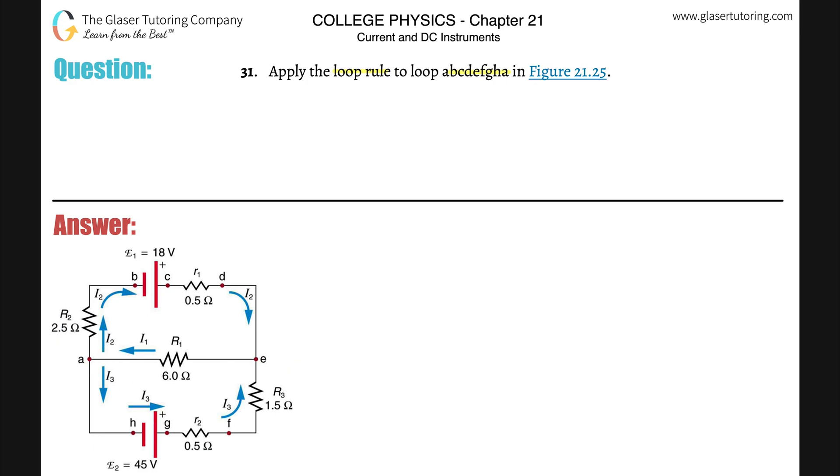So loop rule, all it says is that the sum of all of the potential rises, you can label that as E or V, the sum of all the potential rises minus the sum of all the potential falls should equal zero. That's what loop rule is.